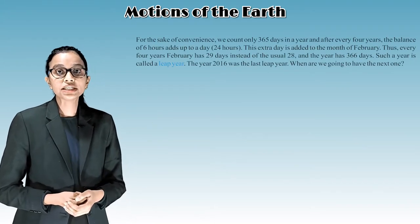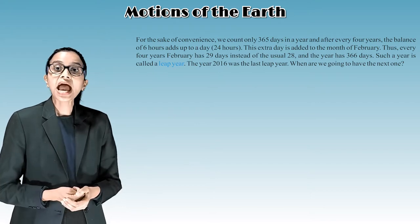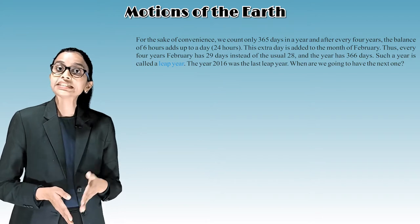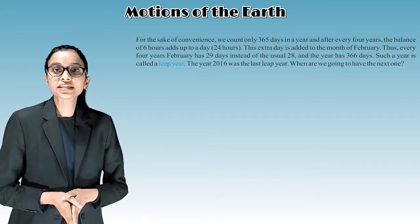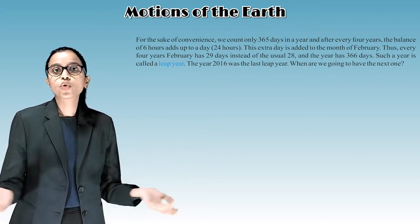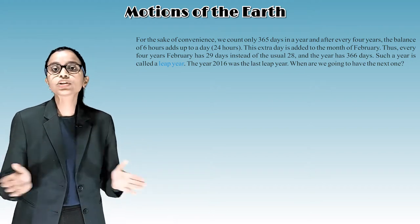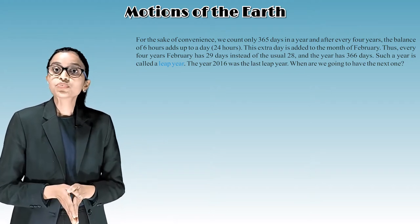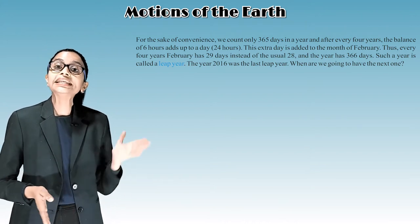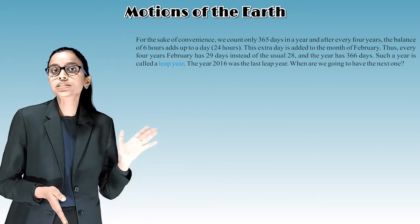For the sake of convenience, we count only 365 days in a year. After every 4 years, the balance of 6 hours adds up to a full day of 24 hours. This extra day is added to the month of February, so every 4 years February has 29 days instead of the usual 28, and the year has 366 days. Such a year is called a leap year. The year 2016 was the last leap year.